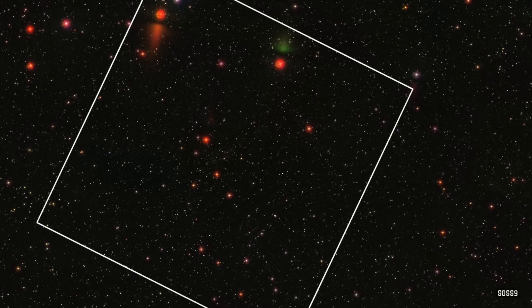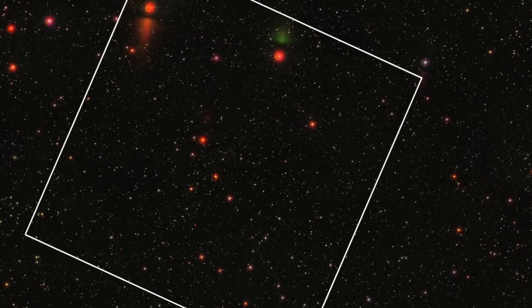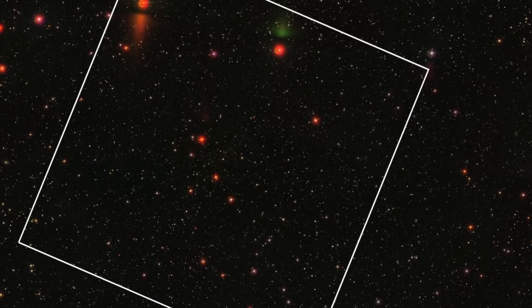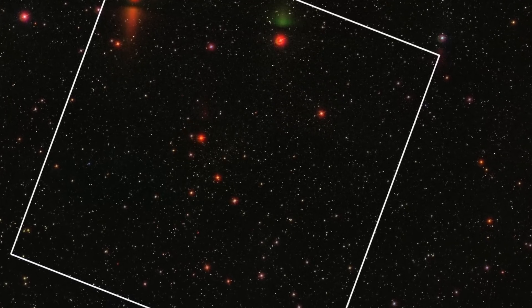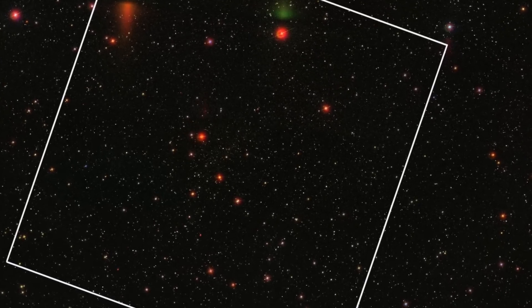From ground-based data of SDSS9, this is what ABEL 2390 looks like. As you can see, it's obvious there's a big cluster of galaxies here. I mean, it's an ABEL object after all.